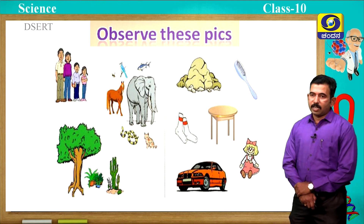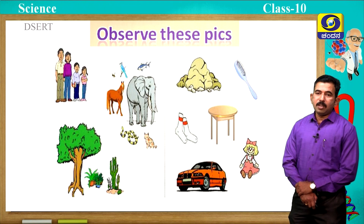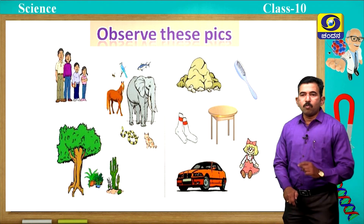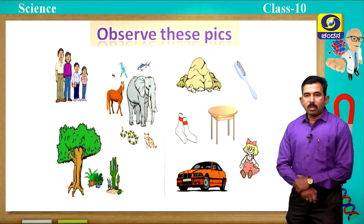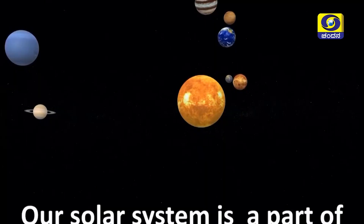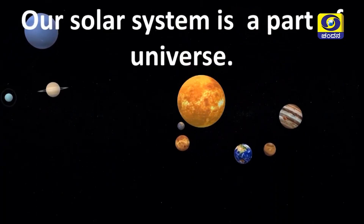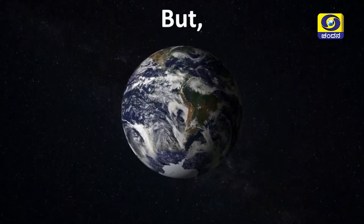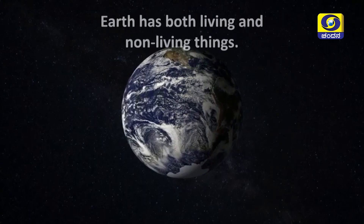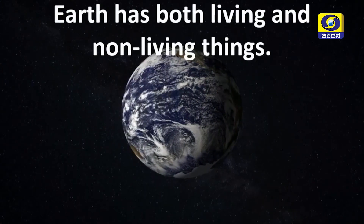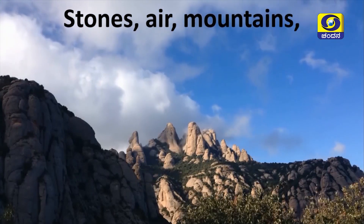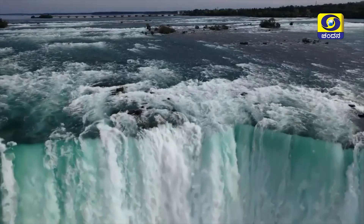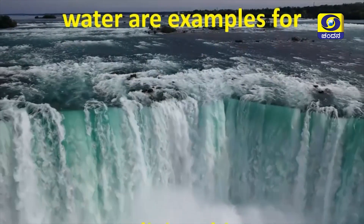You have studied in your lower classes about the difference between living and non-living things. Before discussing the difference, let us see a small video related to that. This universe has many bodies. Our solar system is a part of the universe. All planets except Earth have only non-living things, but our planet Earth has both living and non-living things. Stones, air, mountains, soil, sand, and water are examples for non-living things.